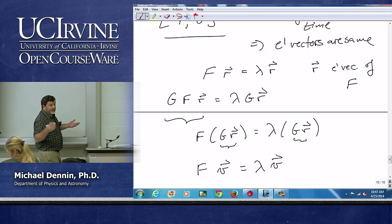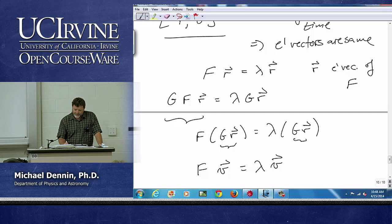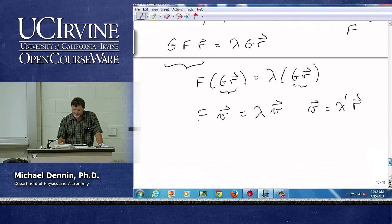Right? Remember r is not unique. r is only determined up to a multiple. So v is some multiple, call it lambda prime times r. Well I've just said